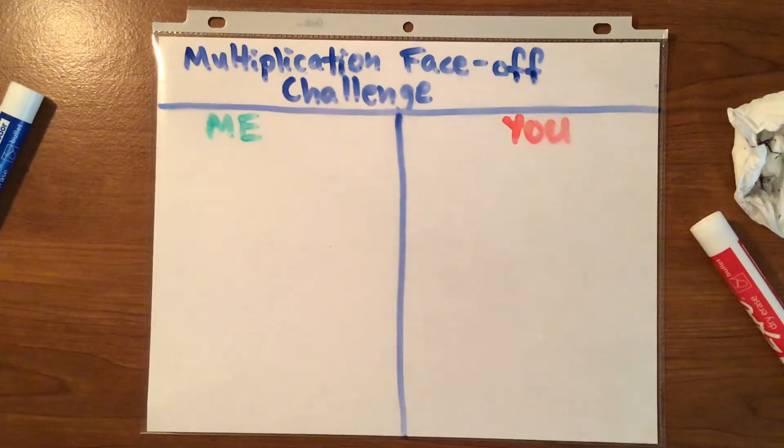We've done addition face-off, subtraction face-off, and multiplication face-off. This is the multiplication face-off challenge. So when we add our answer is called the sum, when we subtract our answer is called the difference, when we multiply our answer is called the product.